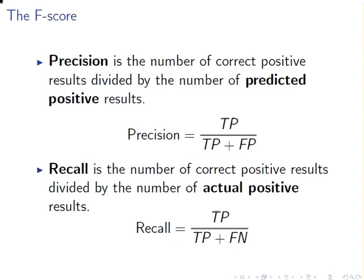Precision is the total number of correct positive results divided by the total number of predicted positive results. Recall is the number of correct positive results divided by the number of actual positive results. So there's a slight distinction between the two — precision is how many were correct out of the ones you predicted, while recall is how many were correct out of the ones that actually were positive.